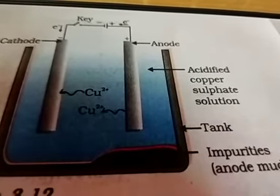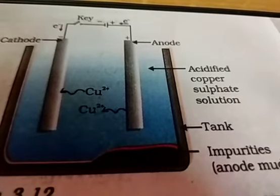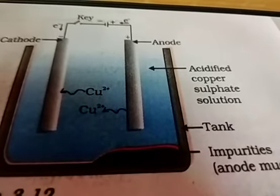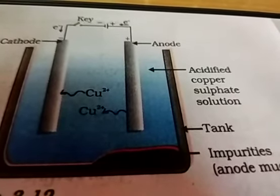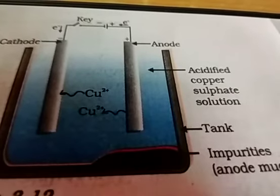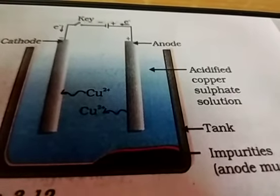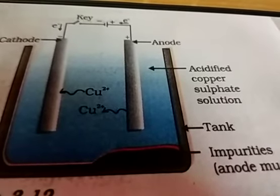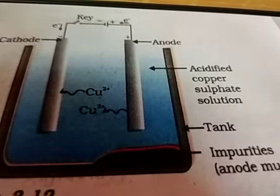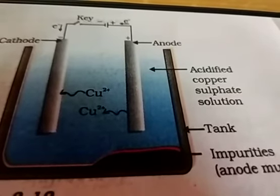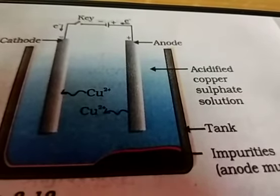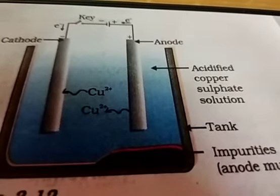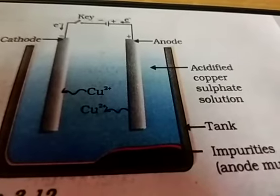Electrolytically means passing of current. In this process, the impure metal is made the anode and a thin strip of pure metal is made the cathode. Whatever metal we want to extract, we must use the same metal as the cathode strip. A solution of the metal salt is used as the electrolyte - the same type of solution should be used.